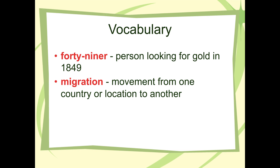A 49er is a person looking for gold in 1849 — that's why they're called the San Francisco 49ers. The people heading to California were there for mostly one purpose, though some like Levi Strauss were mining the miners. Levi's still exists today — you can still go to Kohl's and buy a pair of Levi's. Migration is movement from one country or location to another — this was a mass migration across the country. It also changes the settlement pattern: up to this time, we were slowly creeping across the continent, getting about to the St. Louis area.